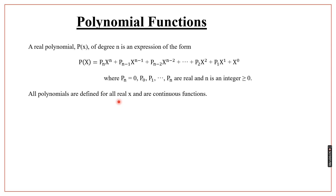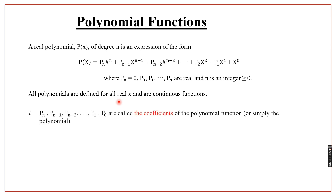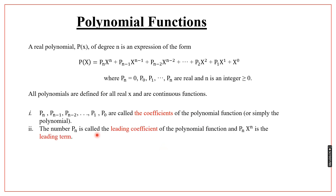Let's look at each symbol in the polynomial form. The values pₙ, pₙ₋₁, pₙ₋₂, ..., p₁ are called the coefficients of the polynomial function. The number pₙ is called the leading coefficient, and pₙxⁿ is called the leading term — that is the leading term, and pₙ is the leading coefficient of that leading term.